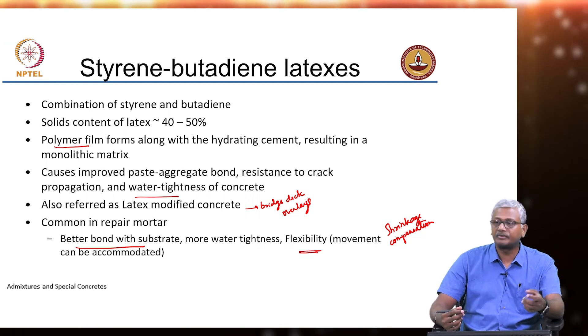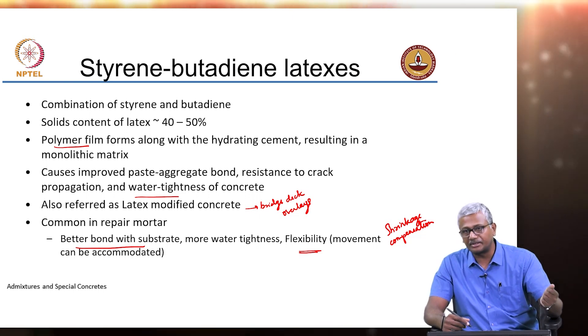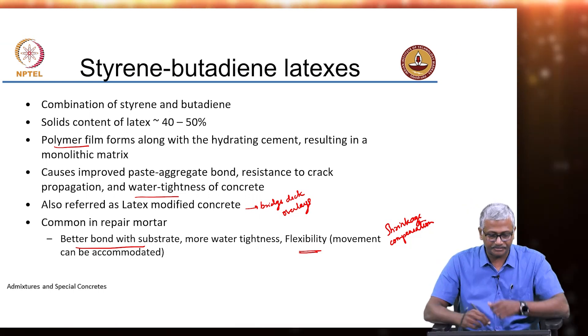Shrinkage compensation is provided by either using a shrinkage reducer or using a cement that expands during hydration so that overall shrinkage is reduced significantly. We can also get that system with an expansive cement admixture.